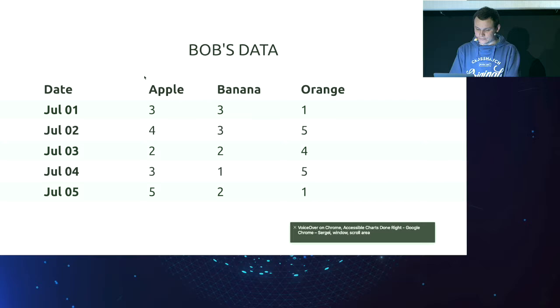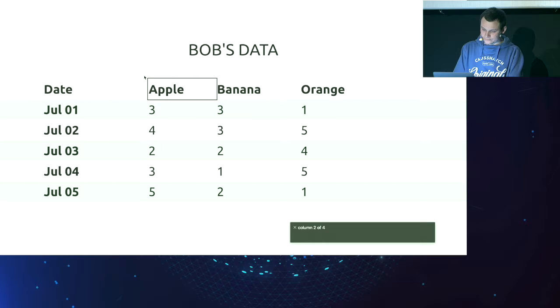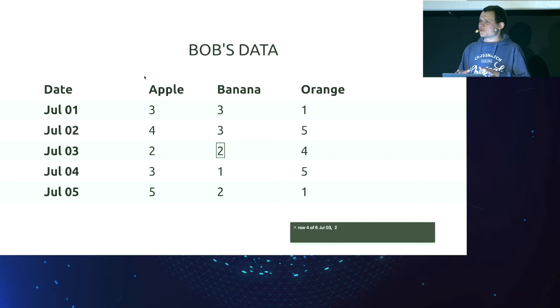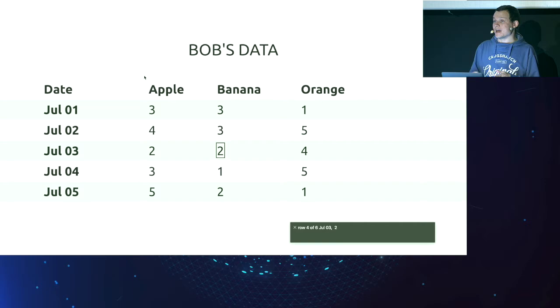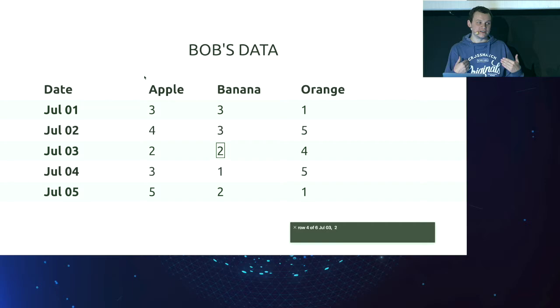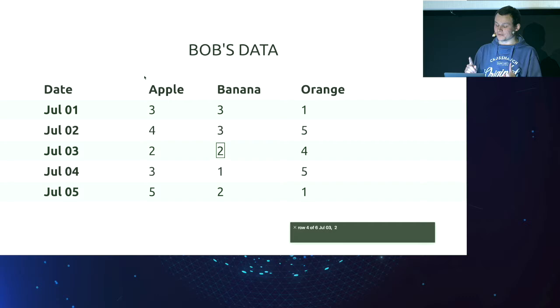Let me demonstrate with VoiceOver. The screen reader announces: 'Bob's data, table four columns, six rows, row one of six — Date, Apple, Banana, Orange.' Then navigating to data rows: 'Row three — Apple: four, Banana... row four of six, July 3rd, two.' The screen reader can perfectly read this table. And if I'm somewhere in the middle and forget what date is associated with a number, the scope attribute we added lets me use a shortcut to hear 'July 3rd' immediately. That's super convenient.